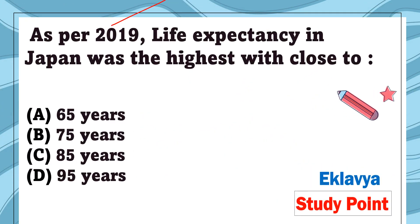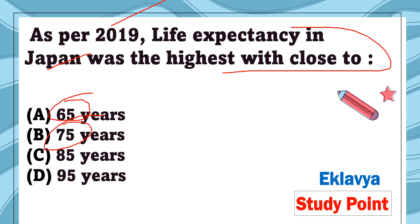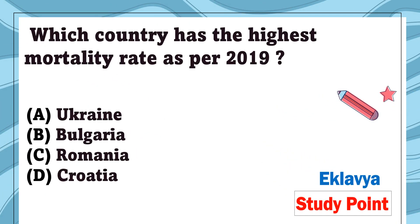Question 31: As per 2019, life expectancy in Japan was the highest with close to — 65 years, 75 years, 85 years, or 95 years. The correct answer is 85 years — Japan had the highest life expectancy as of 2019.